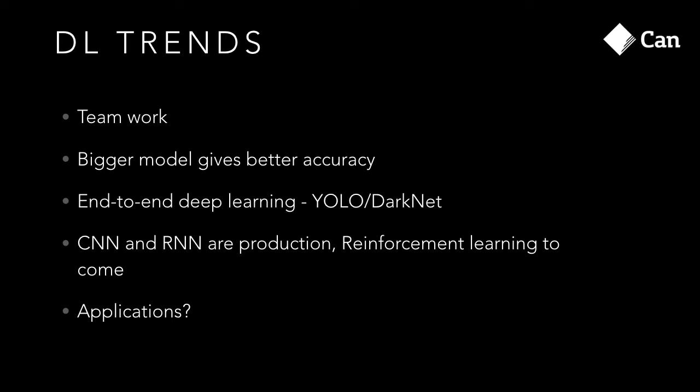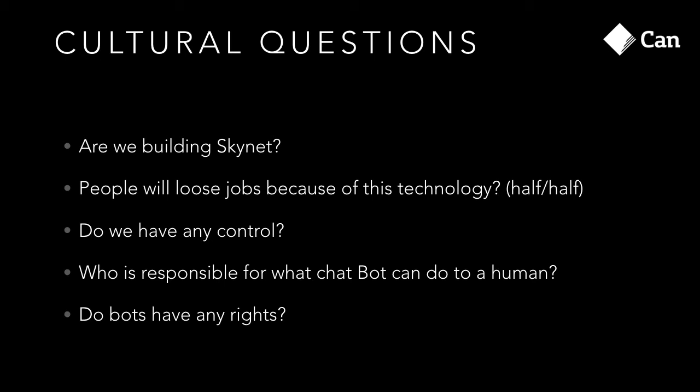The main trends are teamwork — we build on each other's knowledge. Bigger models give better accuracy, but that doesn't help mobile developers because we can't run those big models. End-to-end deep learning is one of the main trends. If you want to see how YOLO works, come see me — I have it running on my iPhone. CNNs and RNNs are now in production and work really well, sometimes better than humans. Reinforcement learning is still emerging, and people are still thinking about its applications.